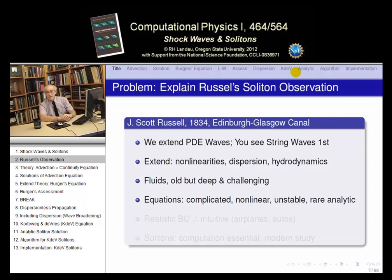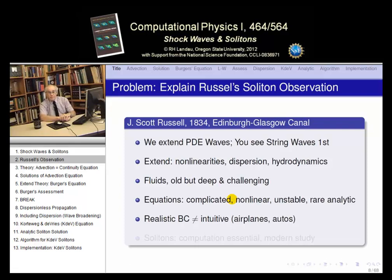We'll have complicated, nonlinear equations. We'll also have unstable solutions — unstable in two senses: they can be numerically unstable because the algorithms have to handle all these complications, and the physics itself can be unstable. Shock waves are unstable. But these are important problems. Once you build in realistic boundary conditions, you can talk about the solution around airplane wings, torpedoes, boats in the water. The boundary conditions you have to put on these partial differential equations are non-intuitive, so the more examples you work through, the more intuition you build about appropriate boundary conditions.